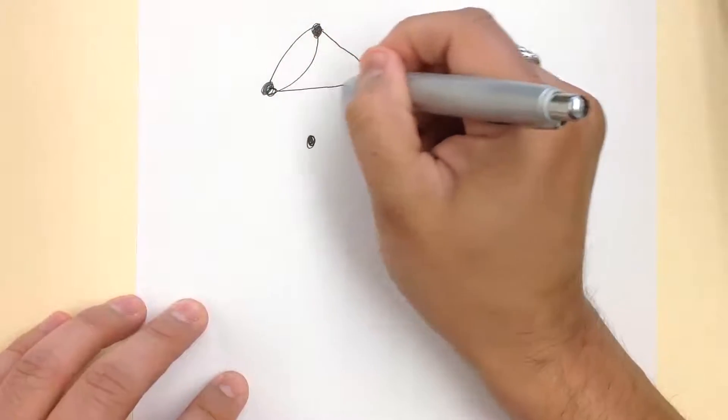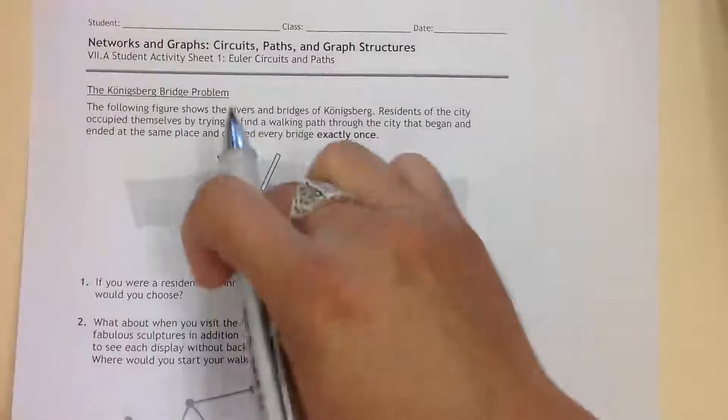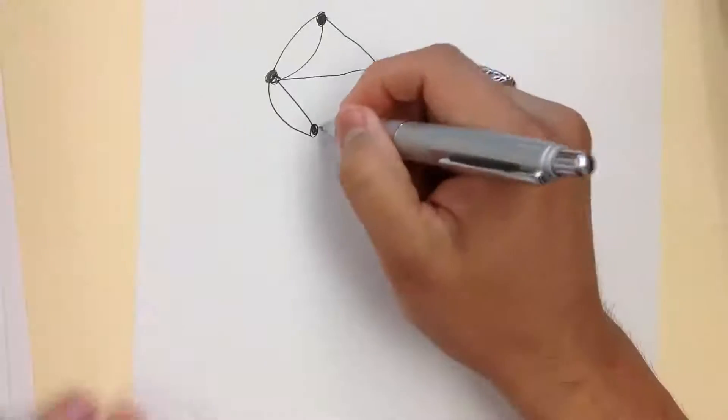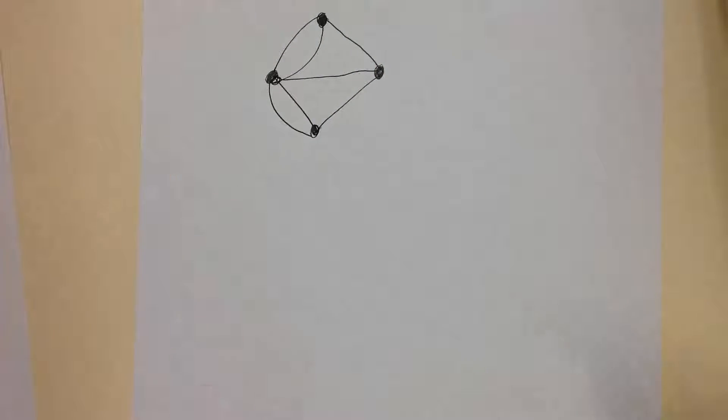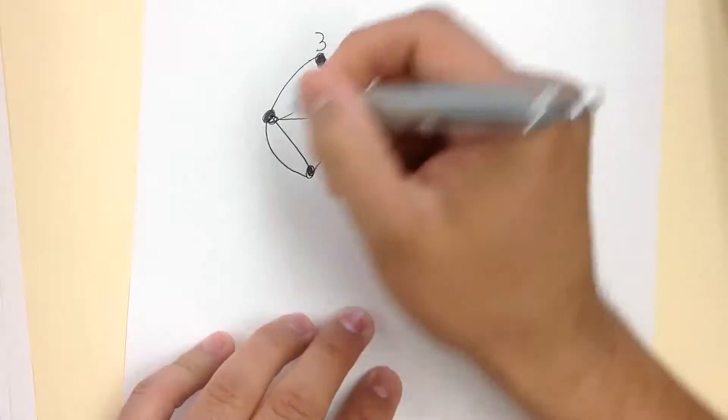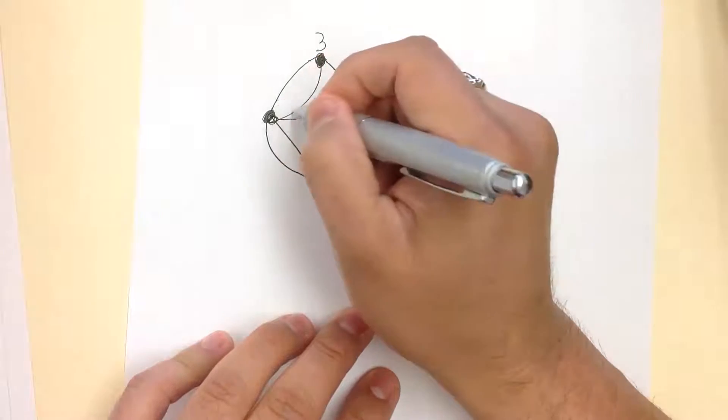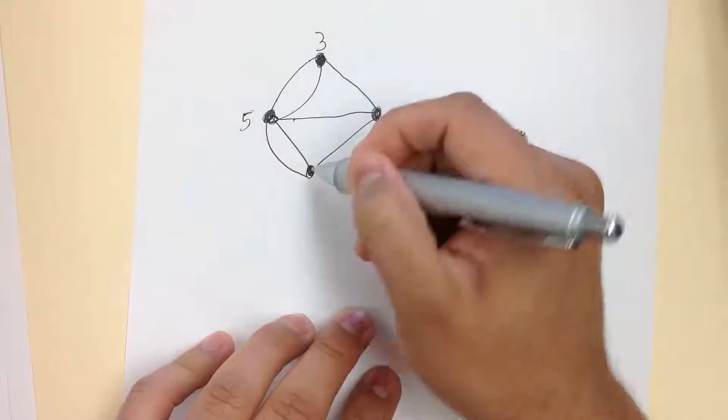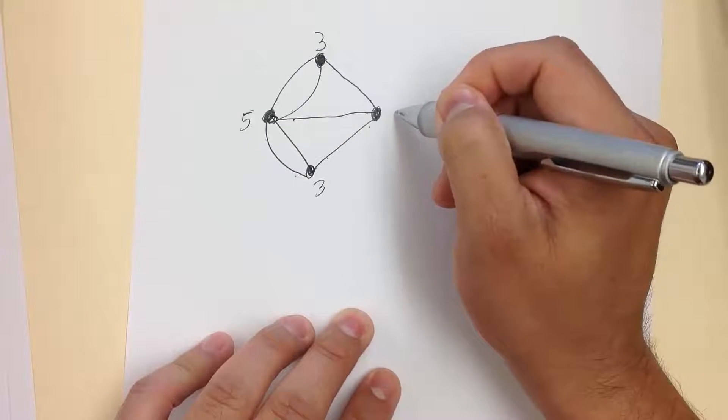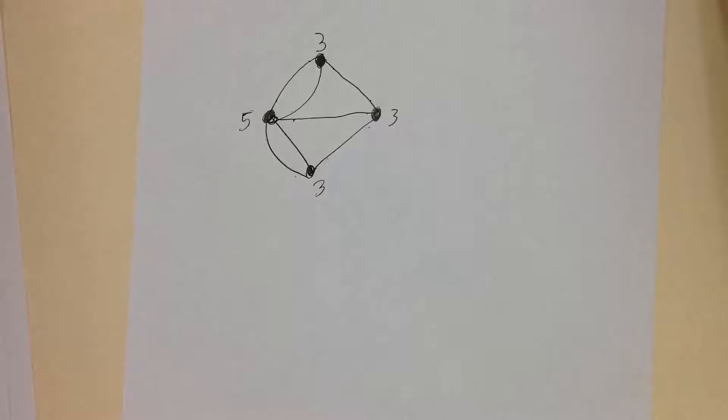Then this island, this shore is connected to this island once. These two islands are connected once. This island is connected twice to the other shore, one and two, and then finally we have one connection right here. Now we get the degree of the nodes. This node gets one, two, three, a degree of three. This one has a degree of one, two, three, four, five. This has a degree of five. One, two, three. One, two, three.